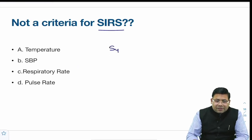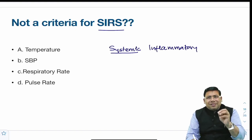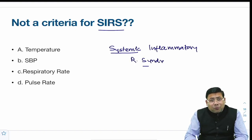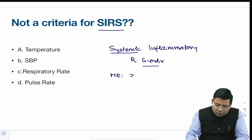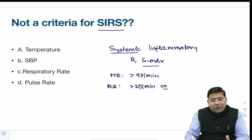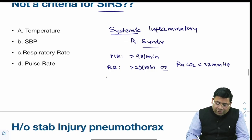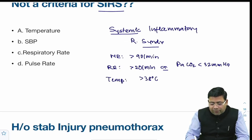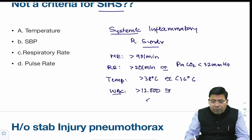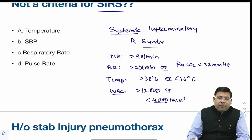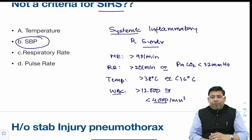There was a question on SIRS — Systemic Inflammatory Response Syndrome. It has four parameters: heart rate more than 90 per minute; respiratory rate more than 20 per minute or PaCO2 less than 30–32 mmHg; temperature more than 38°C or less than 36°C; and WBC count more than 12,000 or less than 4,000 per mm³. Systolic blood pressure is NOT a parameter included in SIRS.